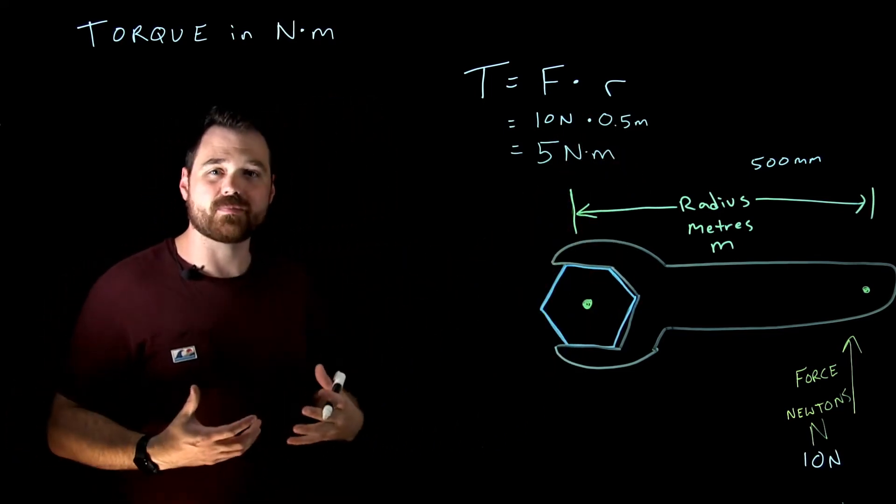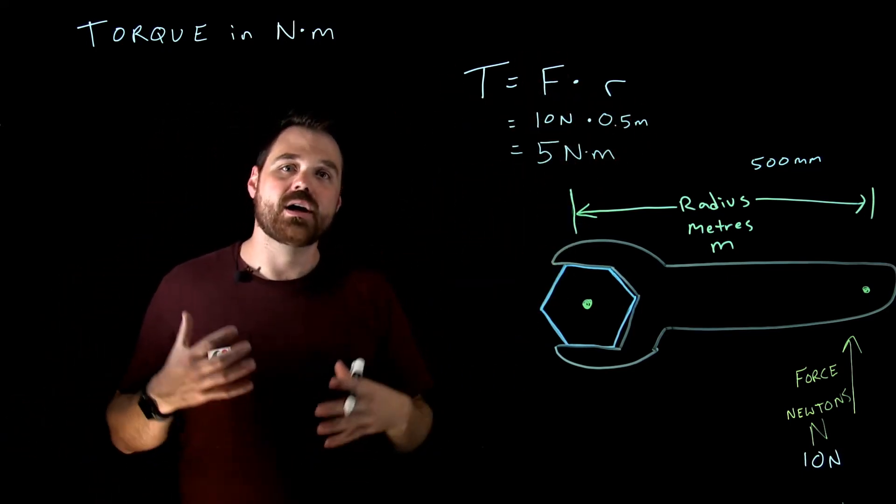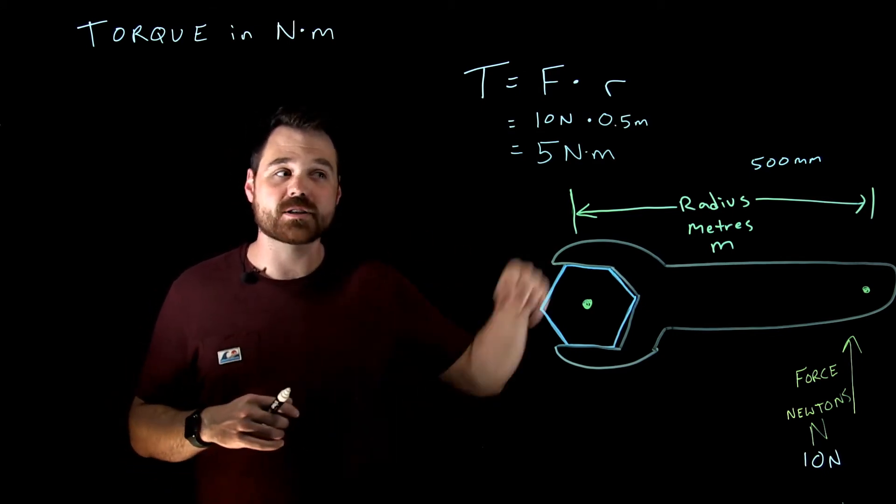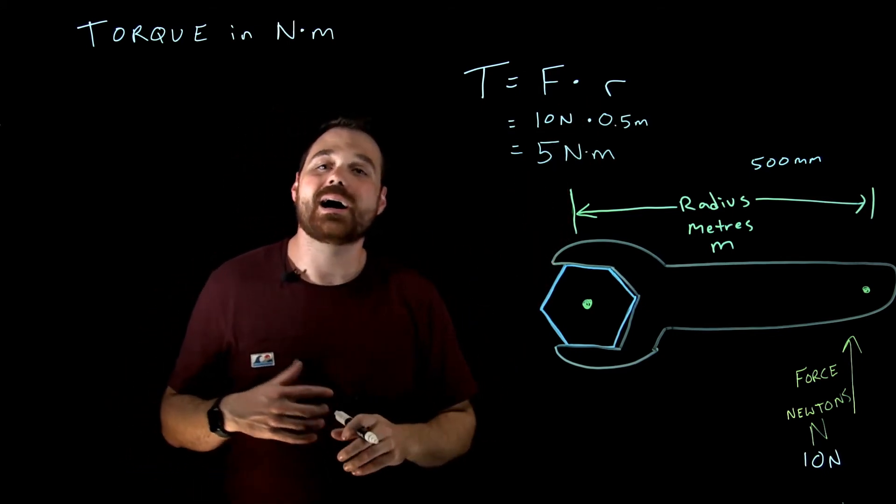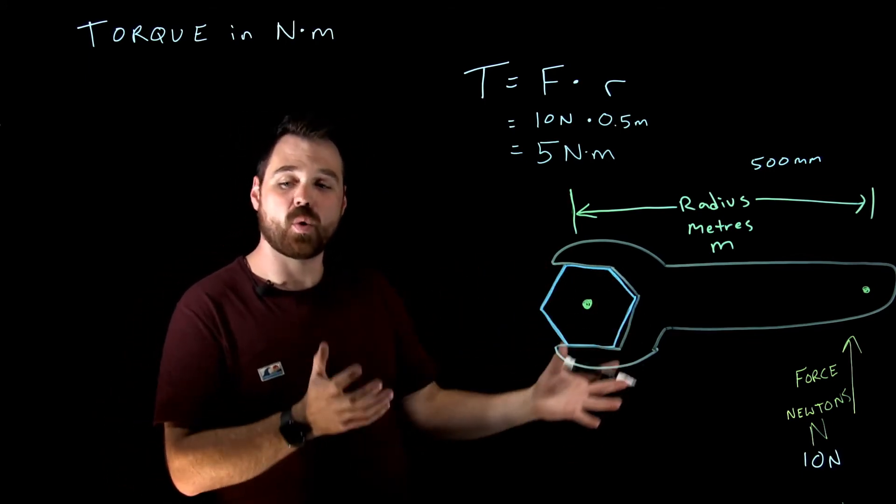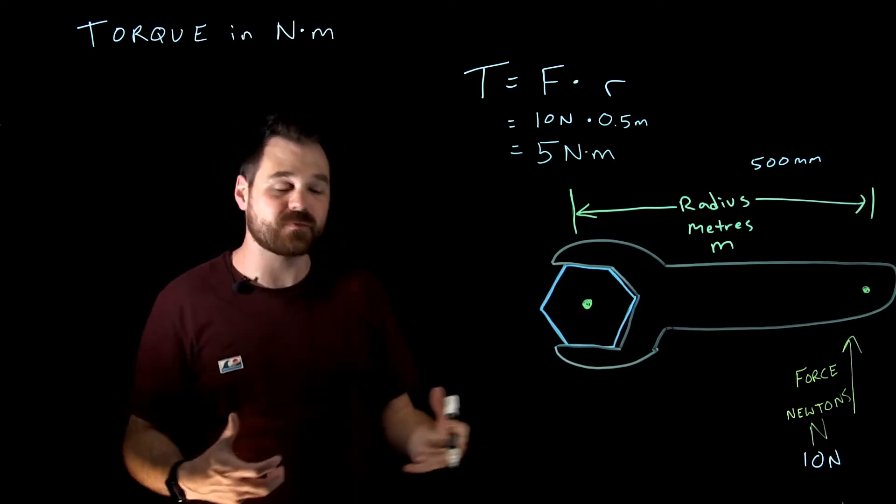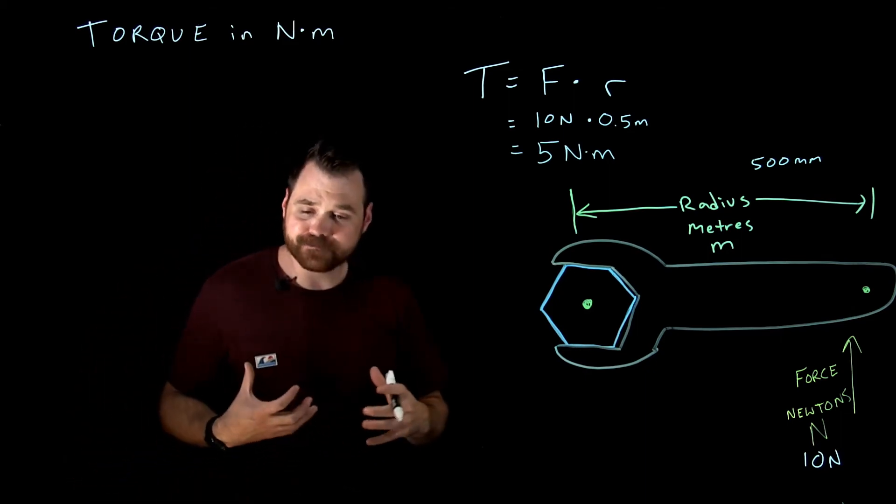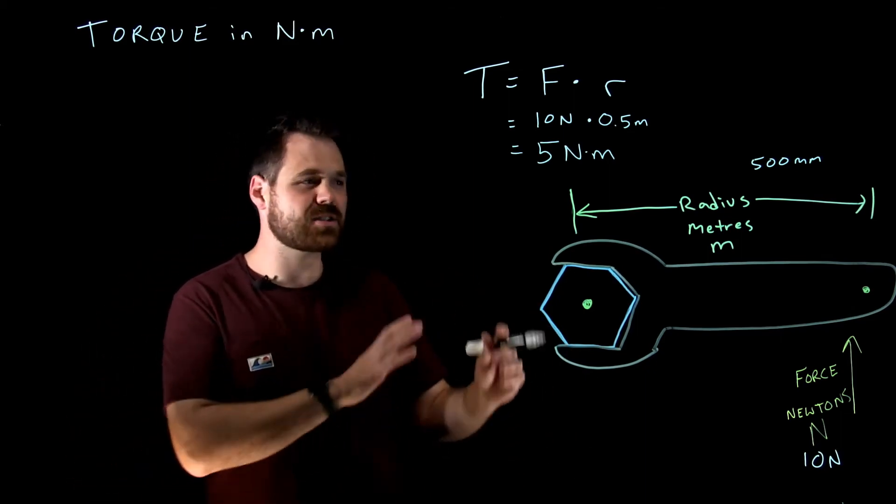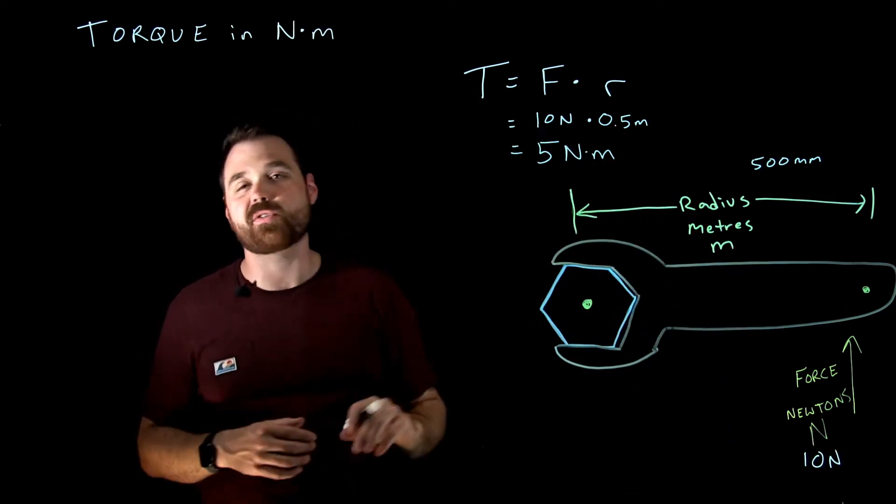We can punch that in and we would have a force of 5 Newton-meters. That's how we would calculate that value. Of course we can transpose this formula to get any other values. If you're looking to rearrange that formula, check out my other video on transposing to help work formulas. That's the basis of torque, or this rotational force, or moment of force that we are applying.